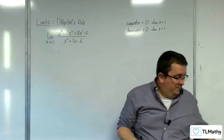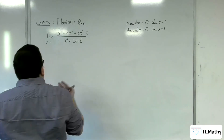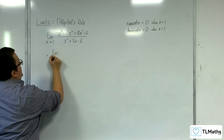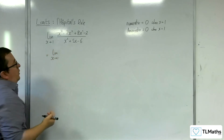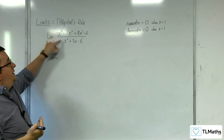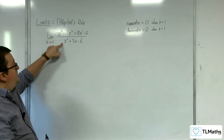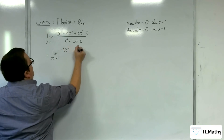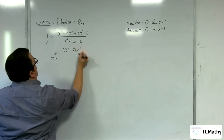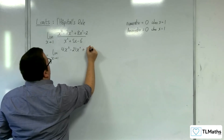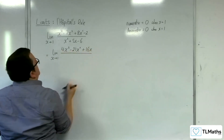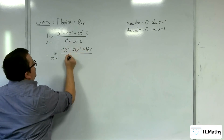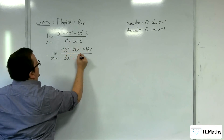So what we do is say to ourselves, OK, this will be equal to the limit as x tends to 1 of differentiating the numerator and differentiating the denominator. So the numerator becomes 4x cubed take away 21x squared plus 16x — the minus 2 differentiates to 0 of course — and the denominator becomes 3x squared plus 5.